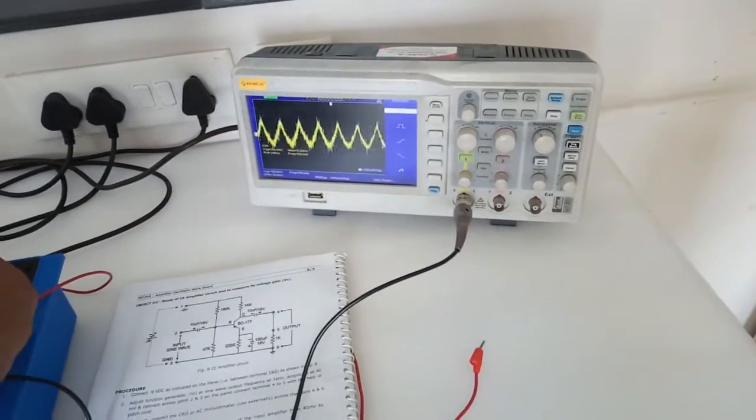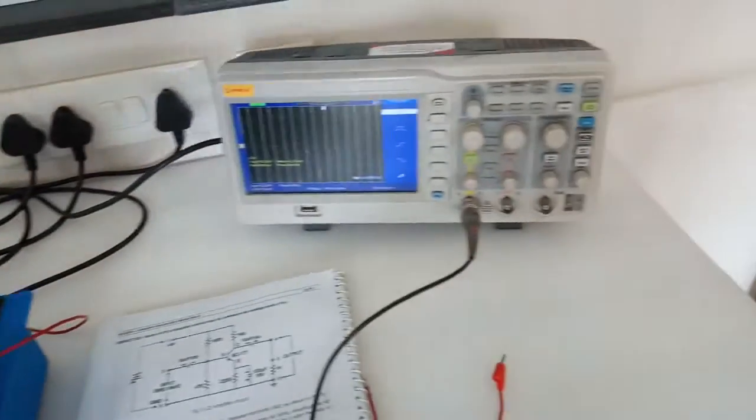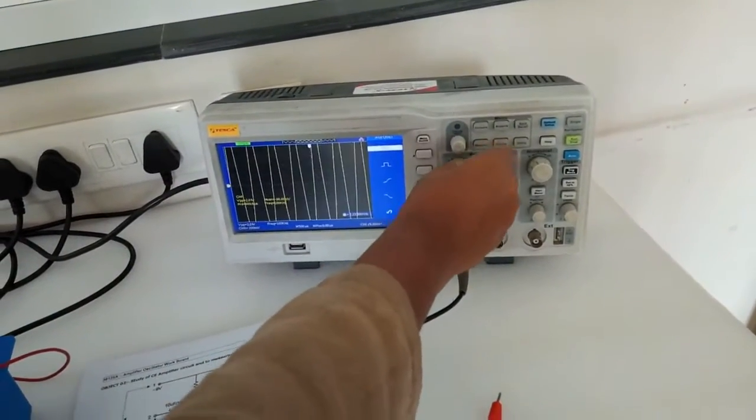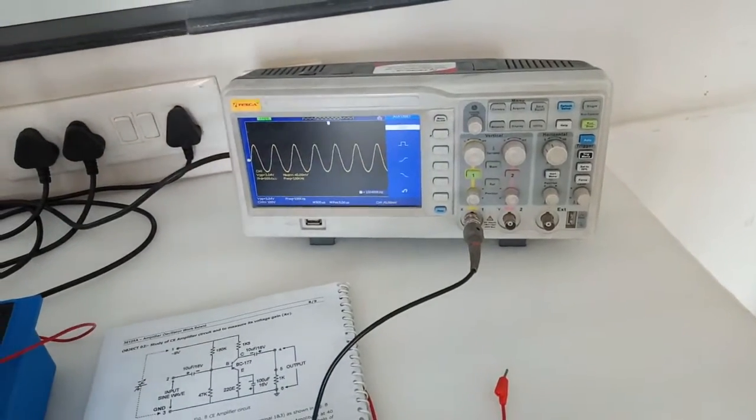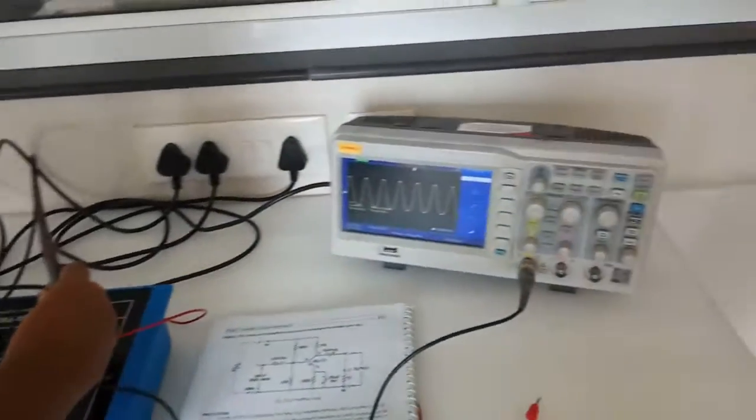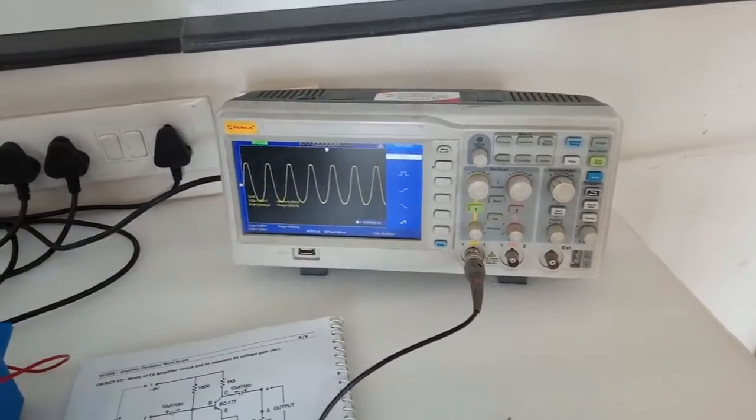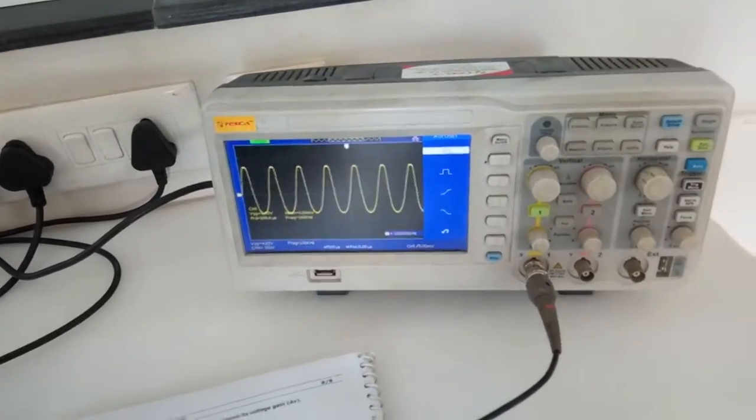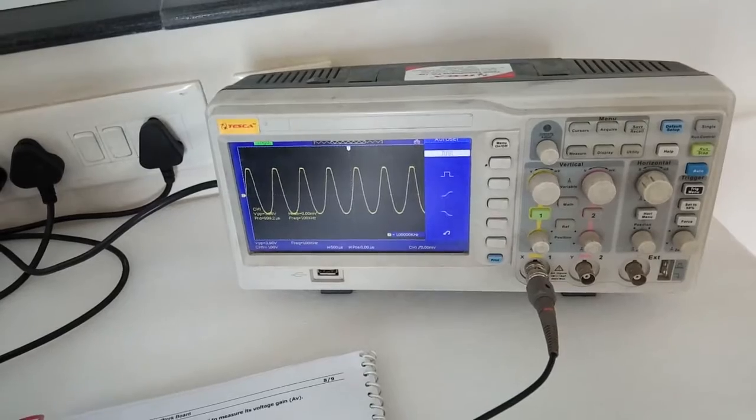Now slowly increase the input voltage and observe the output voltage, and note down the output voltage. From this, we can calculate the voltage gain. The formula is A equals V0 by VI, that is output voltage by input voltage.